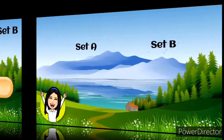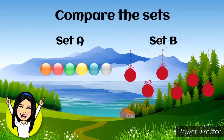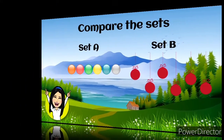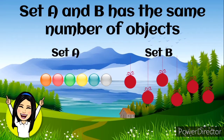Now here's next. Let's compare the sets. Set A has six marbles and set B has six Christmas bulbs. What would be the answer? Set A and set B have the same number of objects. Why? Because they both have six pieces each.